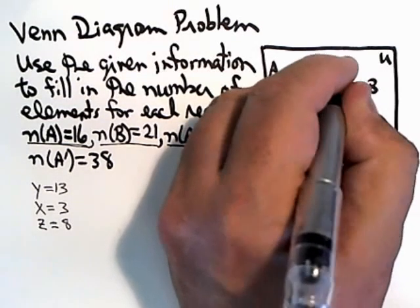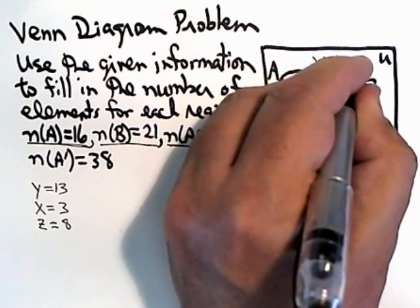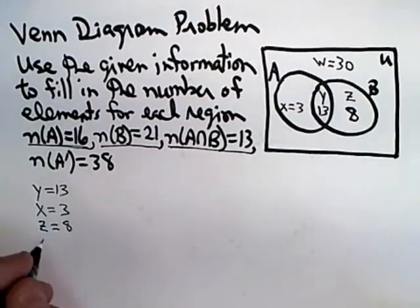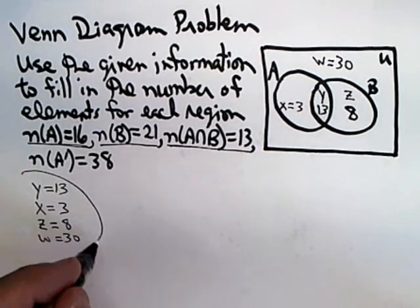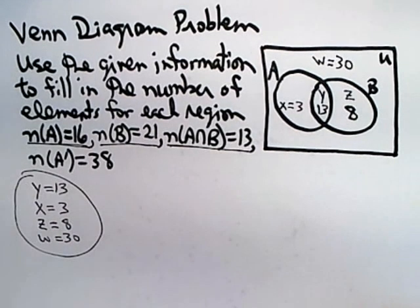By a process like this or similar to this, you should be able to figure out all four of those values just like we did here. Now we've figured out X, Y, Z, and W.